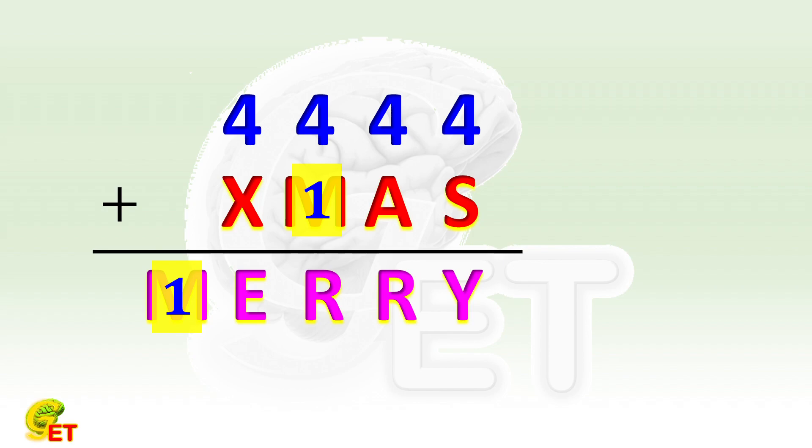We have 4 plus 1, and there are only two possibilities, which are 5 if there is no carry, or 6 if there is a carry. Certainly, the other R is also equal to 5 or 6 at the same time.